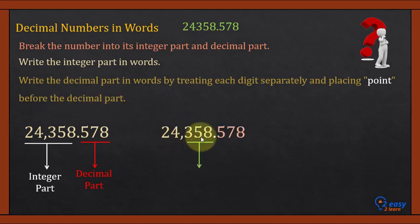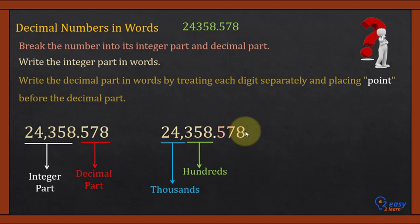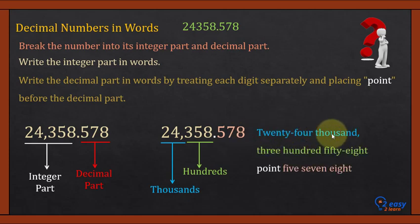Let's do it. This is the integer part: the first group of three digits is the hundreds group, and the next group is the thousands group. So 24,358 is the integer part. In place of the decimal point, we write 'point', and then we read the three digits separately: 578. So it is read as twenty-four thousand three hundred fifty-eight point five seven eight.